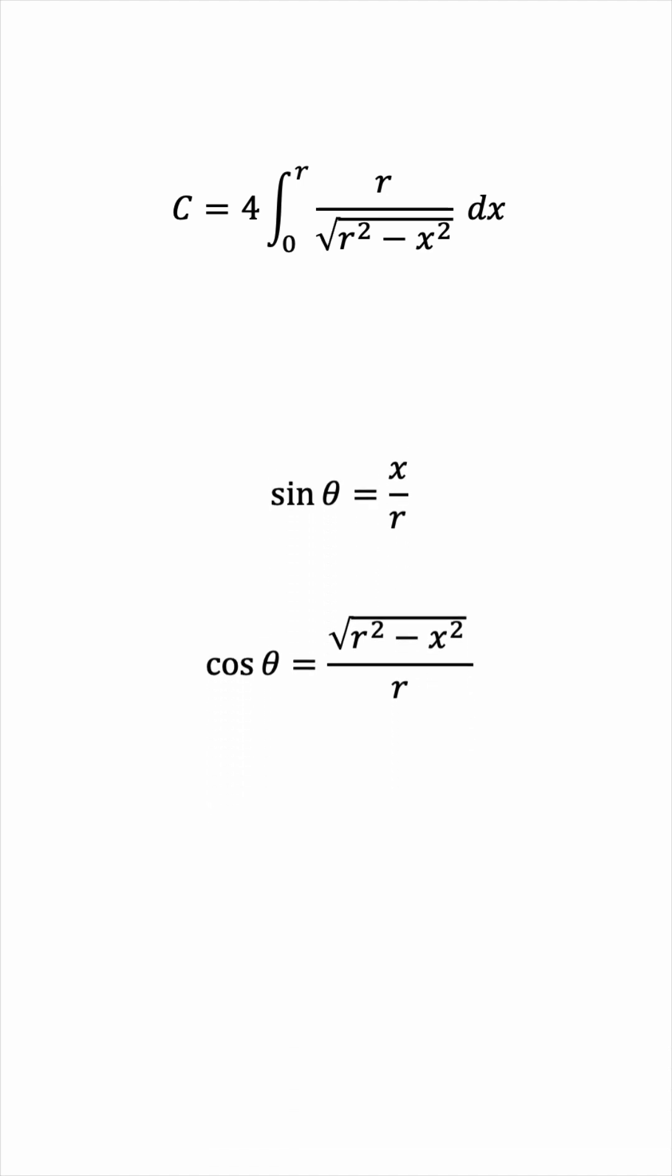Let's now solve for x. This will be r times sine theta. And to get dx, we'll now differentiate both sides. We'll get dx equals r cosine theta d theta.